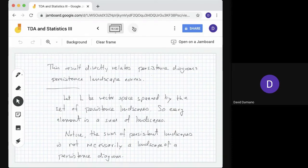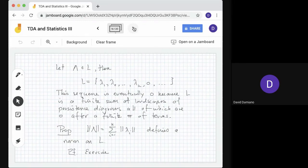This result directly relates to persistence diagrams and persistent landscape norms. Now let's go back to the idea of the vector space. Let L be the vector space spanned by the set of persistence landscapes. Every element is a finite sum of landscapes. Notice that the sum of persistent landscapes is not necessarily a landscape of a persistence diagram. Now let λ be an element of L, then λ = (λ1, λ2,...,λk,...). This sequence is eventually zero because L is a finite sum of landscapes from persistence diagrams. The proposition is: if we define ||λ|| = Σ||λi||, this defines a norm on L. Proof of this will be an exercise.